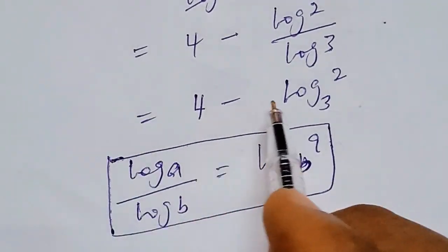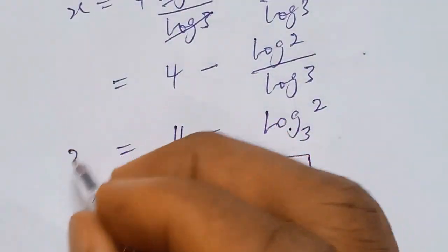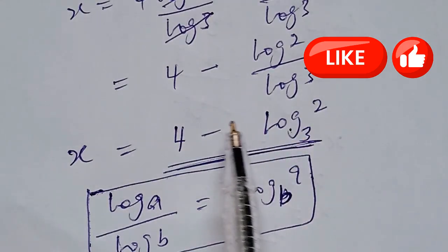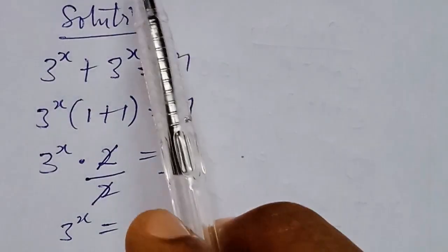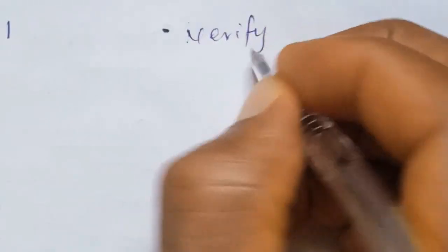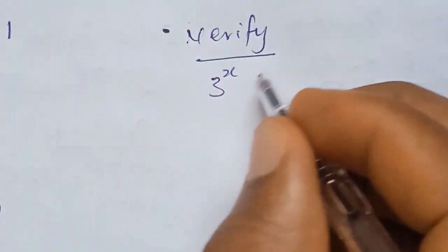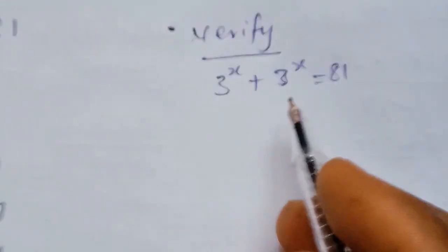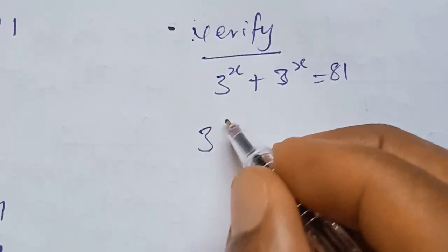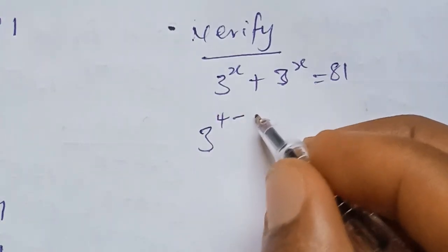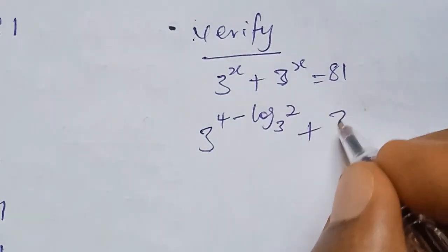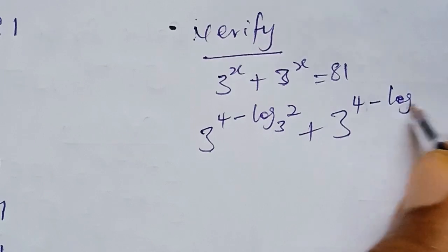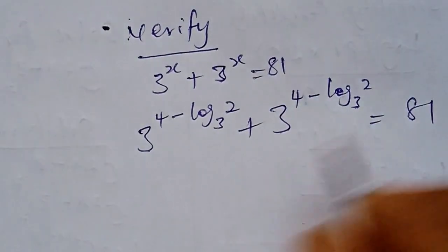So x equals 4 minus log base 3 of 2 is our answer. We can now use this value to verify the original expression 3^x plus 3^x equals 81. Substituting, we get 3^(4 minus log base 3 of 2) plus 3^(4 minus log base 3 of 2) equals 81.